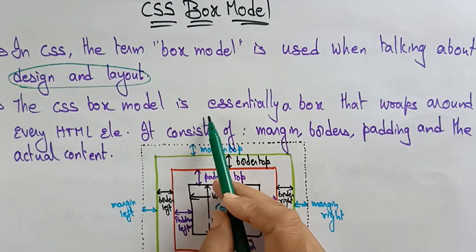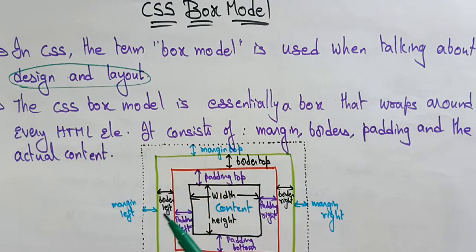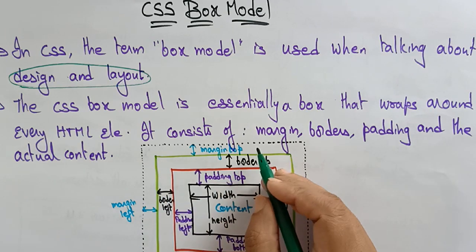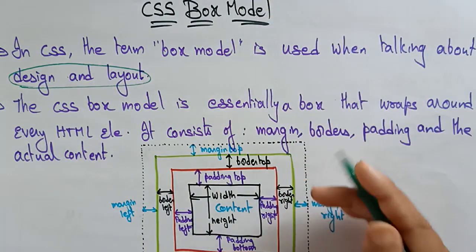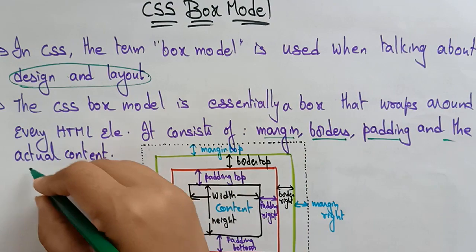The CSS box model is essentially a box that wraps around every HTML element. So this box is going to wrap whatever element you are using in the HTML program. In HTML you are using so many tags — the body, image, everything — so everything can be wrapped in the box model. It consists of: margins, borders, padding, and actual content.